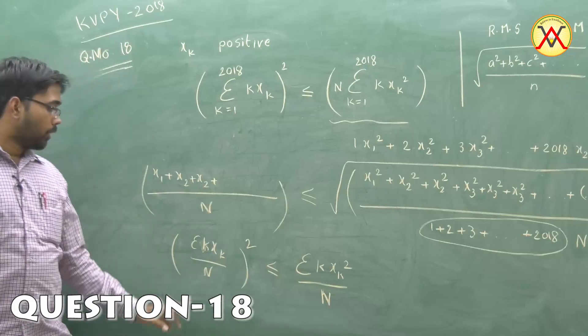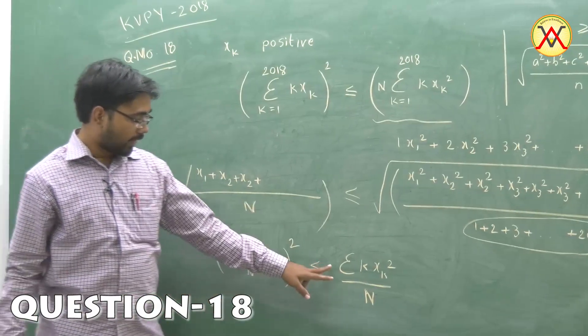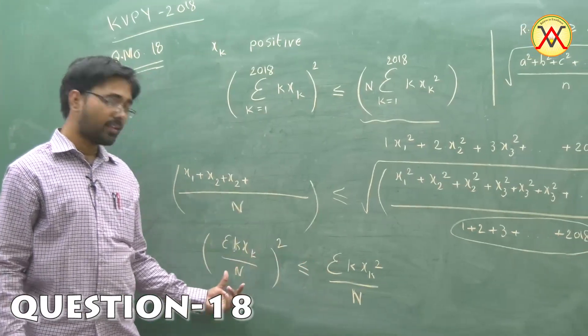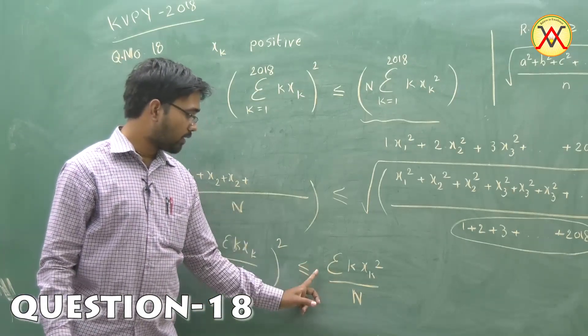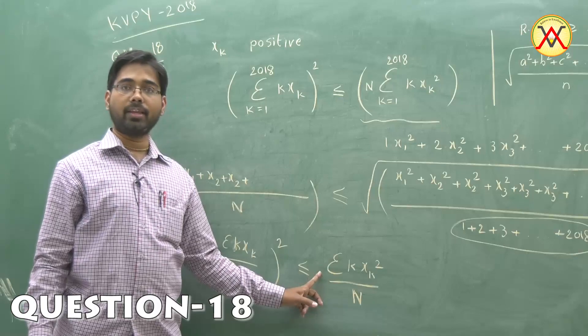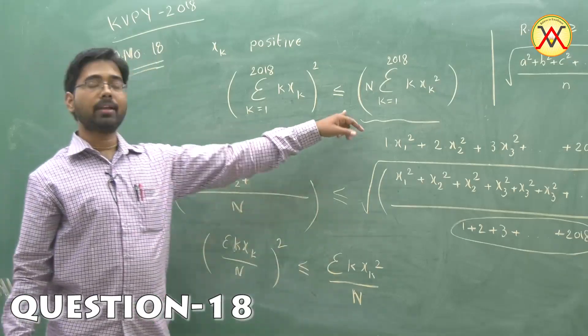Just squaring on both sides. If you bring N² to this side, N and N will get cancelled, so we will be left with 1/N here. That gives us the required inequality.